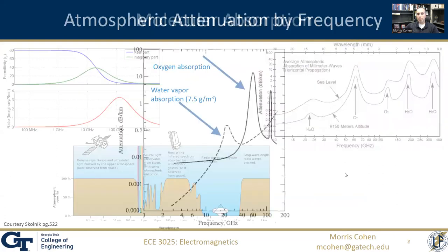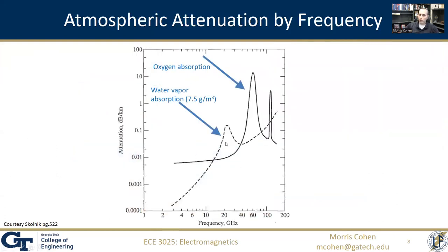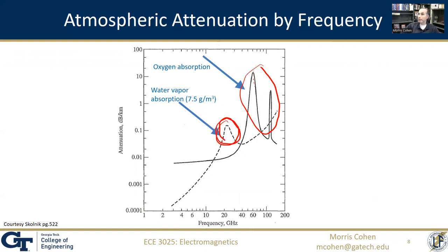Another plot shows attenuation of radio waves, with the 23 gigahertz absorption from water vapor and oxygen absorption points. It's very difficult to propagate at 60 gigahertz because oxygen wiggles precisely at that frequency and absorbs the energy very quickly. The implication is that because water vapor can absorb waves around 23 gigahertz, the relative humidity of air impacts the propagation efficiency.